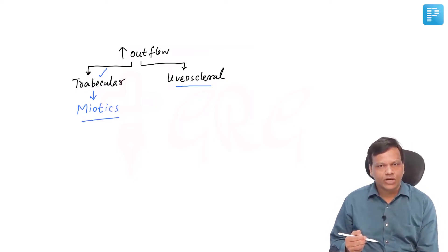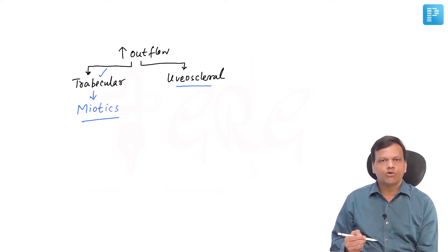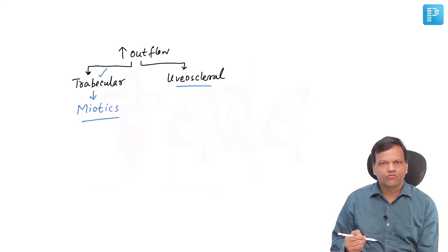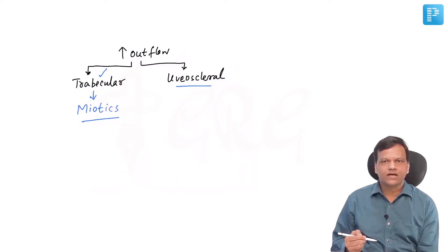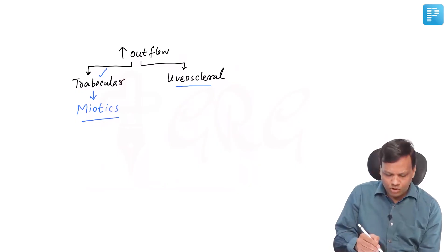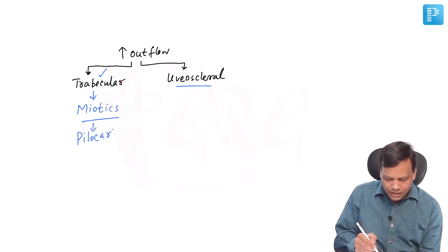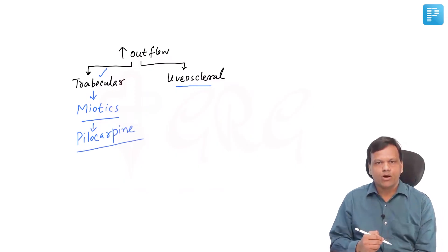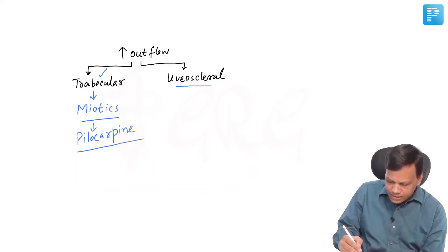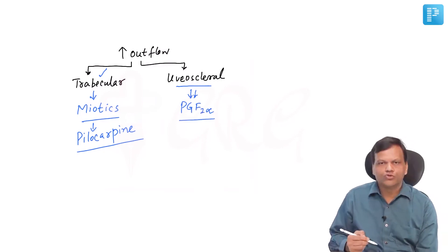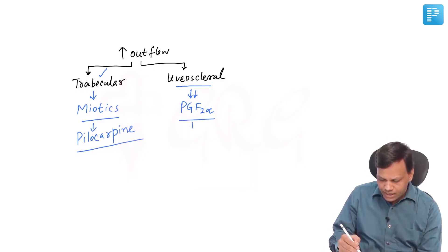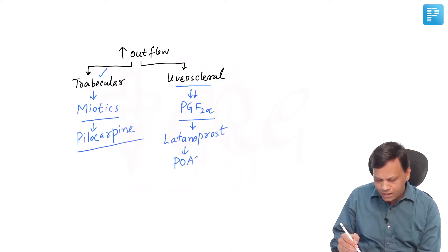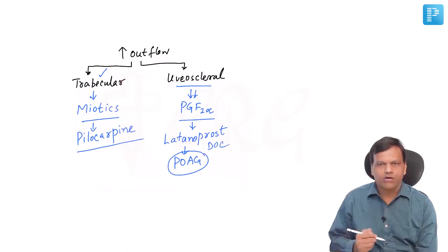If we increase the trabecular outflow, we can treat glaucoma, and that can be done by miotics. Whenever the pupil dilates it causes more obstruction to the angle, meaning trabecular outflow is stopped — that is why mydriatic drugs can precipitate an acute attack of glaucoma in angle-closure glaucoma. Miotics like pilocarpine are useful in angle-closure glaucoma by removing this block. On the other hand, prostaglandin F2-alpha — latanoprost — opens the uveoscleral outflow and is the drug of choice for primary open-angle glaucoma.